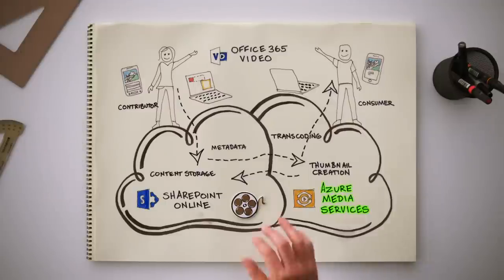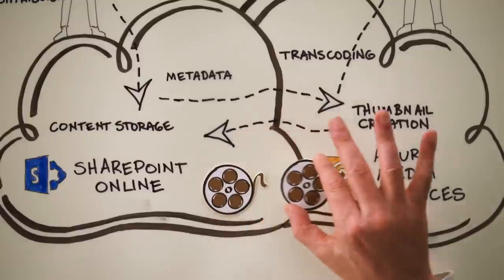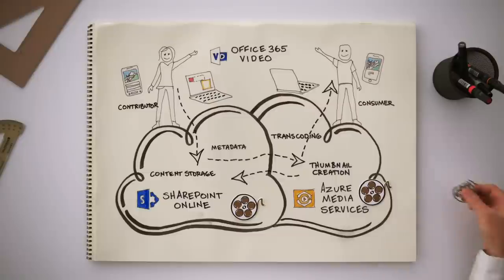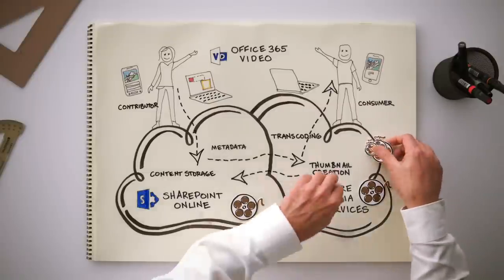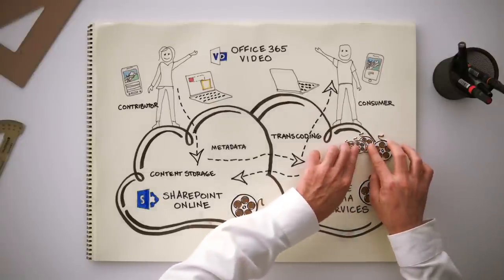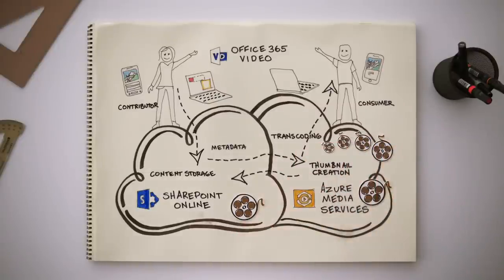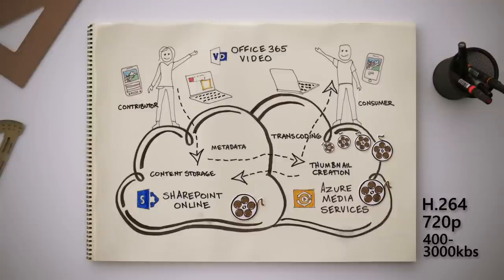Next, we send a copy of the original file over to Azure Media Services to be transcoded into a number of different resolutions. This will help prep it for adaptive smooth streaming so that our consumer receives the best playback experience based on a combination of device and bandwidth availability. Playback is based on H.264 at 720p, ranging from about 400 to 3,000 kilobits per second.